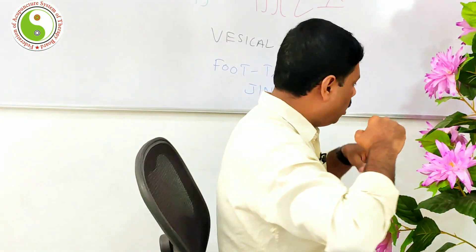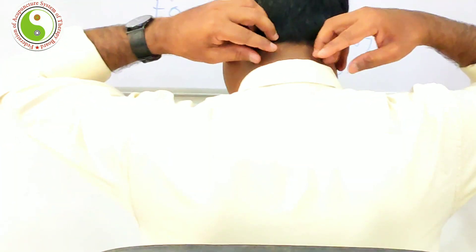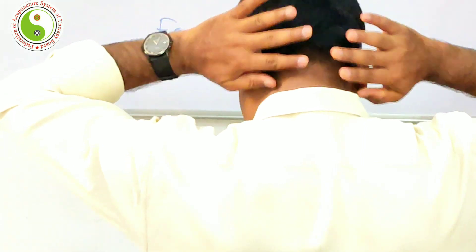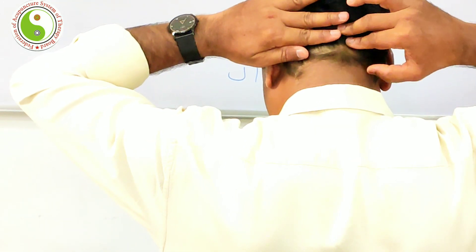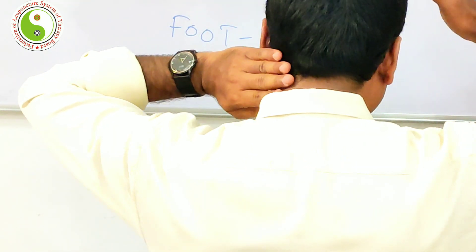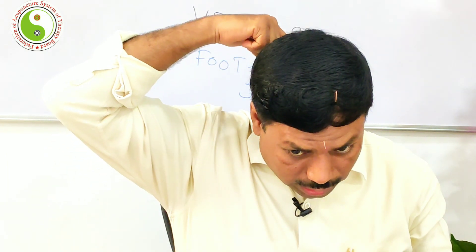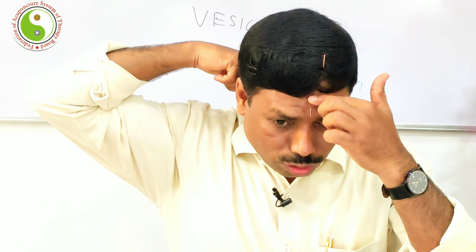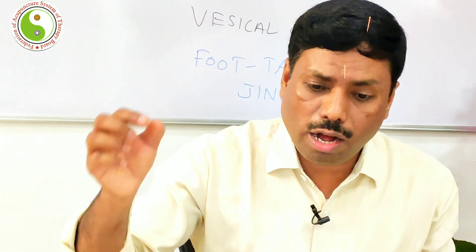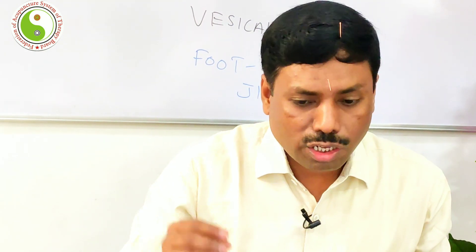The posterior hairline is where the hair ends — you take the hairs upward and where the line is found, that ending is the posterior hairline. The anterior-posterior midline runs from front to back. Among all these points, UB2, UB3, UB7, UB8, UB9, and UB10 are really crucial points. UB10 is Tianzhu, located 1.3 cun lateral to the posterior midline and 0.5 cun above the posterior hairline.